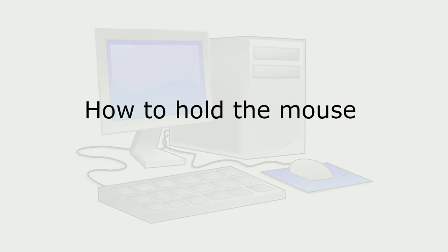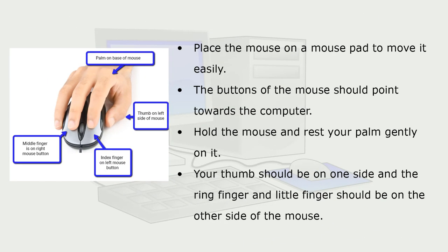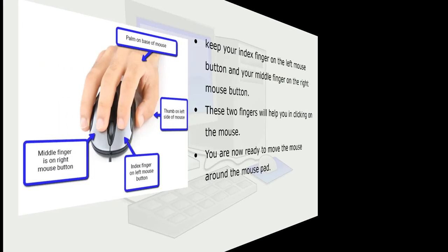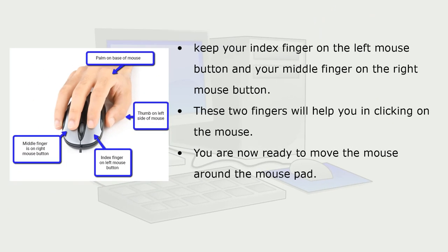How to Hold the Mouse. Place the mouse on a mouse pad to move it easily. The buttons of the mouse should point towards the computer. Hold the mouse and rest your palm gently on it. Your thumb should be on one side and the ring finger and little finger on the other side. Keep your index finger on the left mouse button and your middle finger on the right mouse button. These two fingers will help you in clicking on the mouse. You are now ready to move the mouse around the mouse pad.